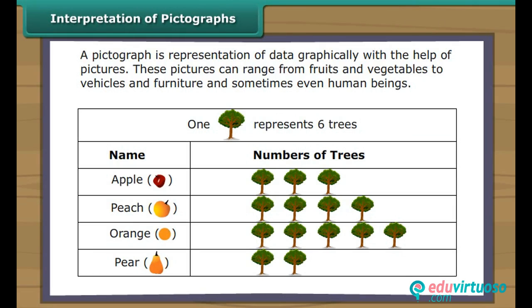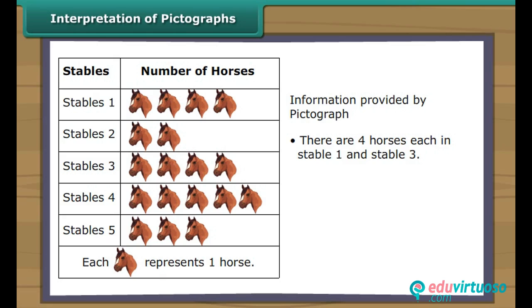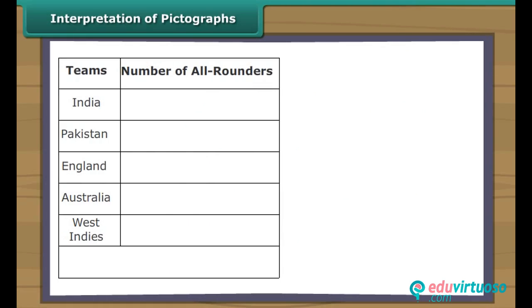A pictograph is a representation of data graphically with the help of pictures. These pictures can range from fruits and vegetables to vehicles and furniture and sometimes even human beings. Look at this pictograph — it shows details of horses in five different stables in a village. Each picture of a horse represents one horse. It is clear from the pictograph that there are four horses each in stable 1 and stable 3. Stable 4 has the largest number of horses; stable 2 has the least.